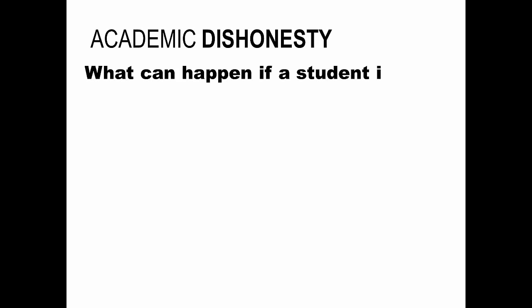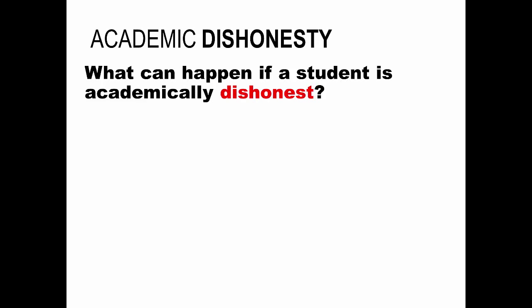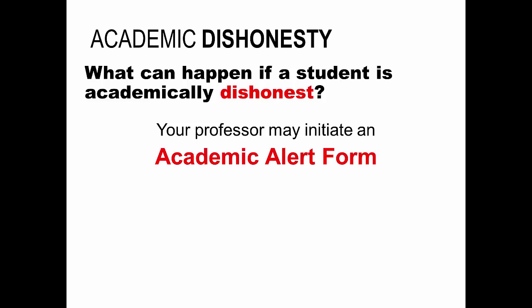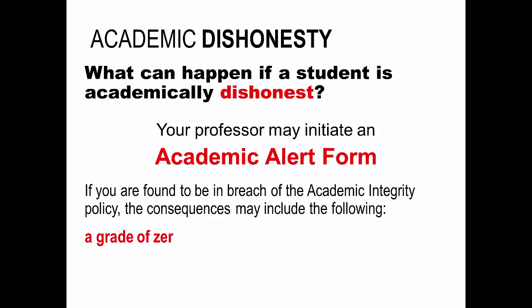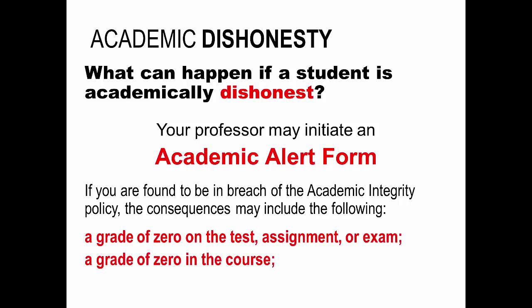So, what can happen if a student is academically dishonest? For alleged acts of academic dishonesty, your professor may initiate what's called an academic alert form. He or she will ask to meet with you to discuss the situation, and may bring the matter to the associate dean or the dean. If you're found to be in breach of the academic integrity policy, the consequences can range from a zero on that particular test, assignment, or exam, a zero in the course, or removal from your program.